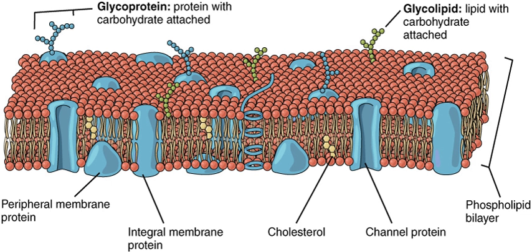These enzymes, which use free fatty acids as substrates, deposit all newly made phospholipids into the cytosolic half of the bilayer. To enable the membrane as a whole to grow evenly, half of the new phospholipid molecules then have to be transferred to the opposite monolayer. This transfer is catalyzed by enzymes called flippases. In the plasma membrane, flippases transfer specific phospholipids selectively, so that different types become concentrated in each monolayer.